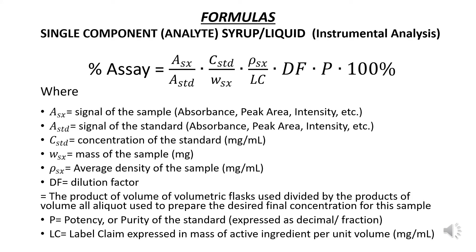For a single component assay of a liquid or syrup using instrumental analysis, the following formula is given. The assay is equal to the signal of the sample, multiplied by the concentration of the standard, multiplied by the density of the liquid, multiplied by the dilution factor, times the potency of the standard, multiplied by 100%. The product is divided by the signal from the standard, multiplied by the weight of the sample and the labeled amount.